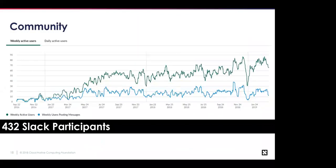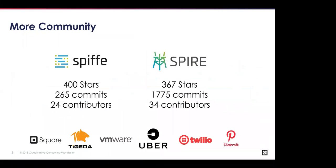Since joining the CNCF, the community has seen interesting uptake. There are 432 participants in the Slack channel with slow and steady growth in both active participants and messaging. Most day-to-day activity happens in Slack, with mailing lists used for documents and announcements. Notable companies engaging with the project include Square, VMware, Uber, Twilio, Pinterest, and others — all exploring how to align their use cases with SPIFFE/SPIRE's building blocks.